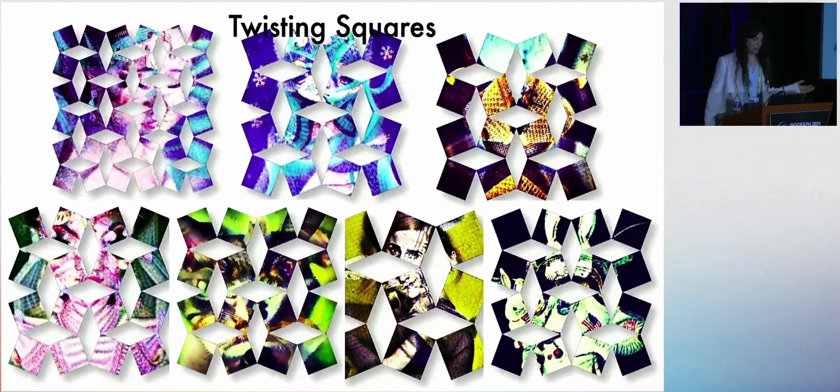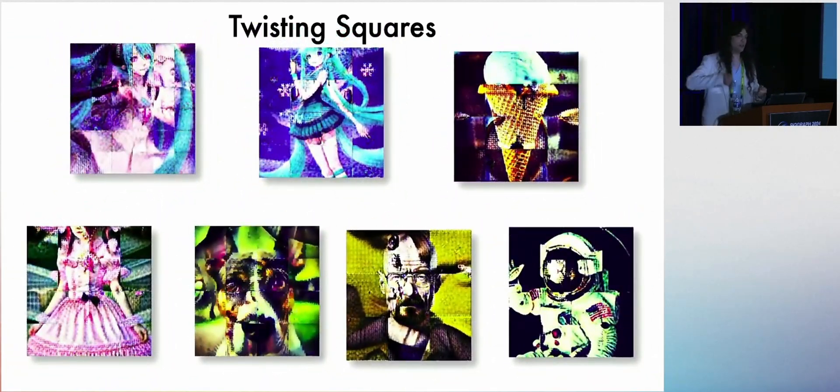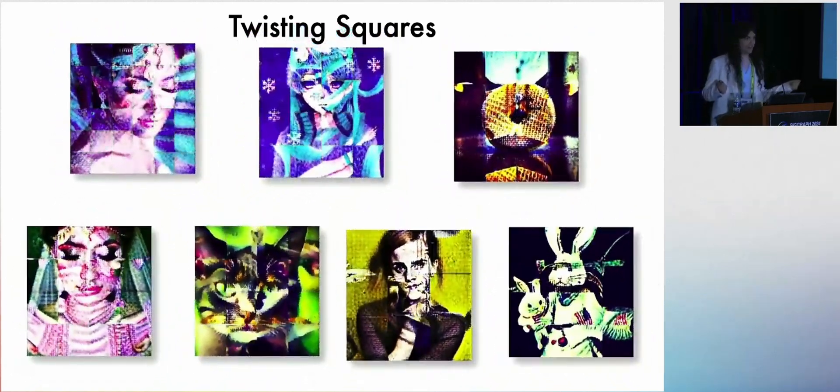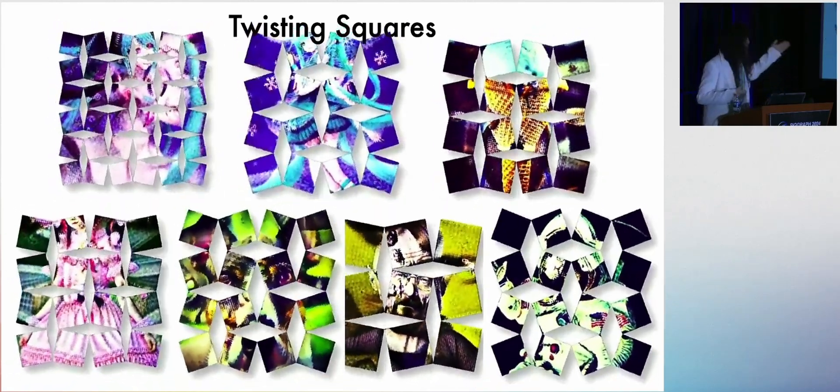We also have Twisting Square Illusions, where we take an image and we slice it into a bunch of pieces and connect them with a bunch of hinges. And when we rearrange it, we can get a different prompt.